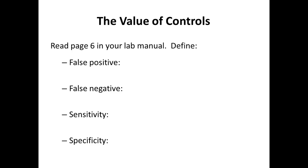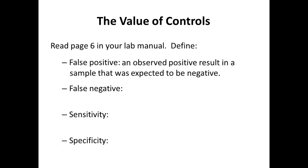Whenever we're doing experimental design, we have to have some parameters. Sometimes we can run into problems where it's difficult to tell the test results — we can sometimes have false positives. A false positive means we observe what looks like a positive result in a sample that was expected to be negative.